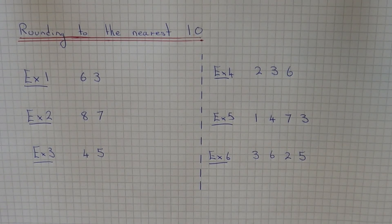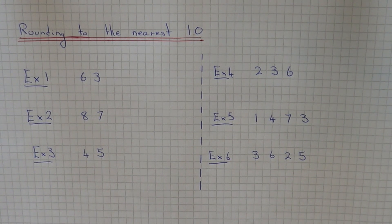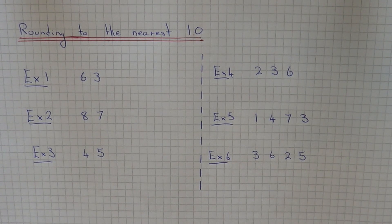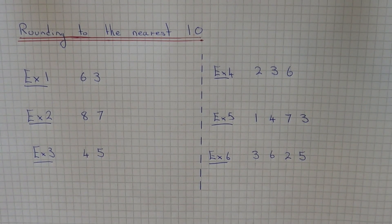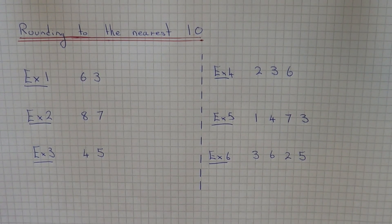Today I'm going to look at rounding to the nearest ten. Before you do this, think about what rounding to the nearest ten actually means. What you're trying to do is write the number to the closest number in the ten times table. So this will either be ten, twenty, thirty, forty, fifty, sixty, seventy, eighty, ninety, or a hundred.